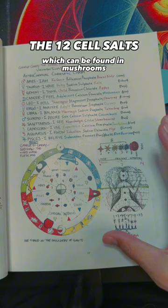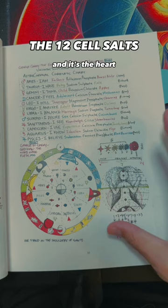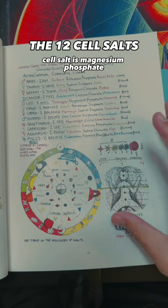July 21st to August 21st belongs to Leo and it's the heart, that's why you hear the term heart of a lion, and represents the teen stage and corresponding cell salt is magnesium phosphate, which can be found in cherries.